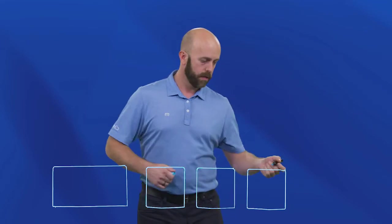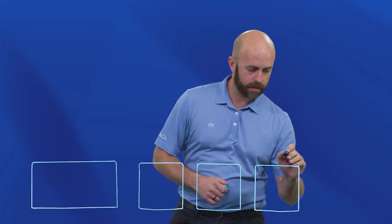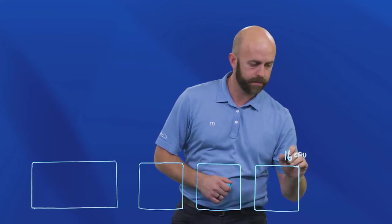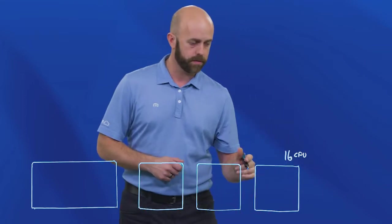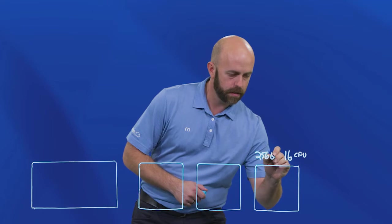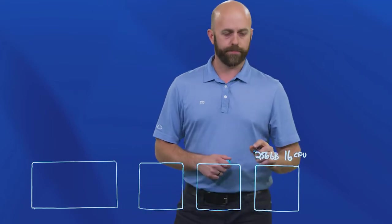Each one of these servers has hardware resources. For each one of these we're going to say it's got 16 CPU. Notice we didn't say vCPU because these are hardware resources. And let's say we've got 256 gigs of RAM. Each one of these will have the same amount.